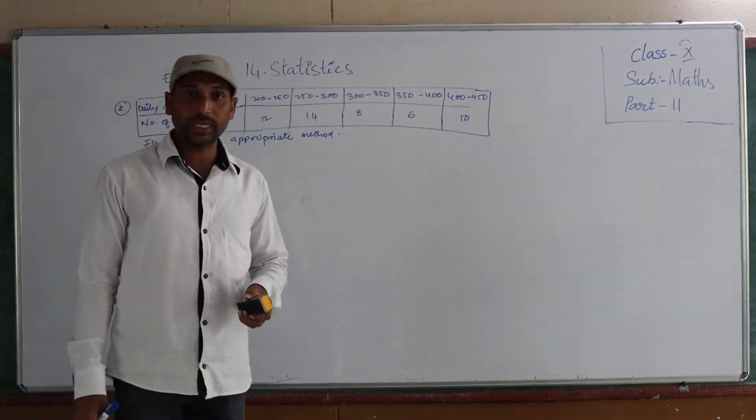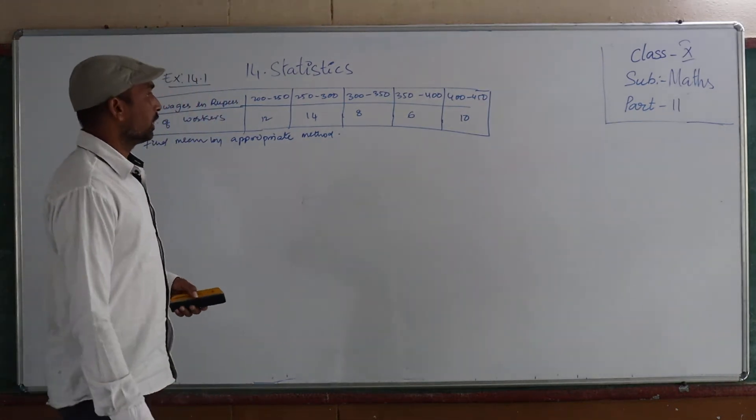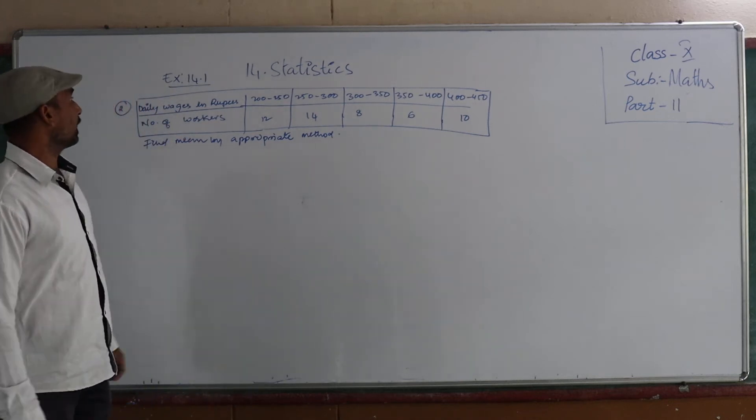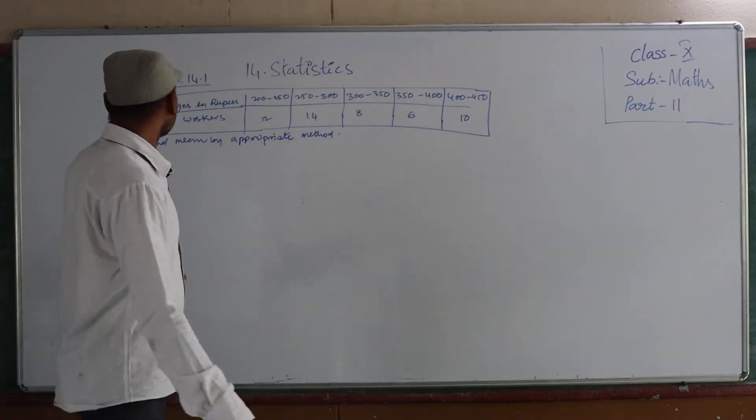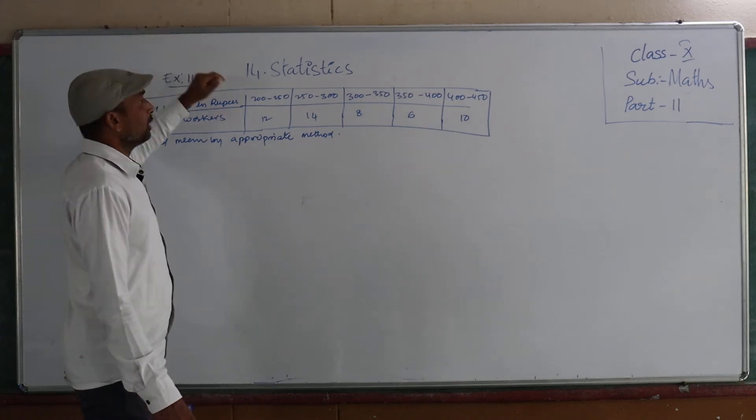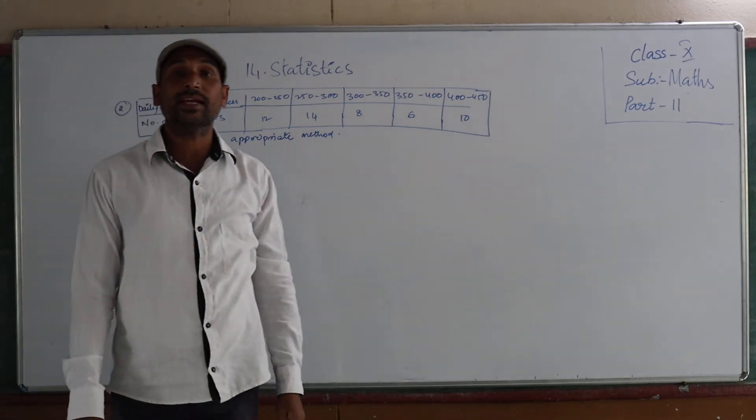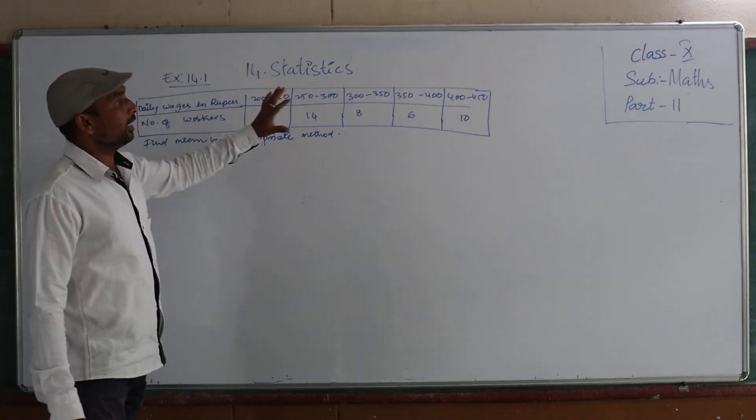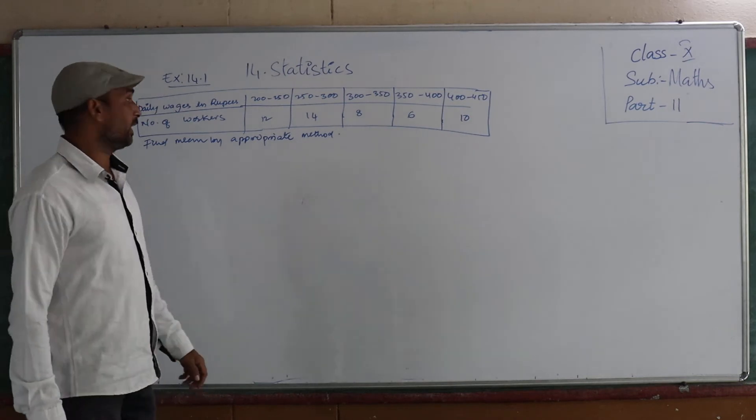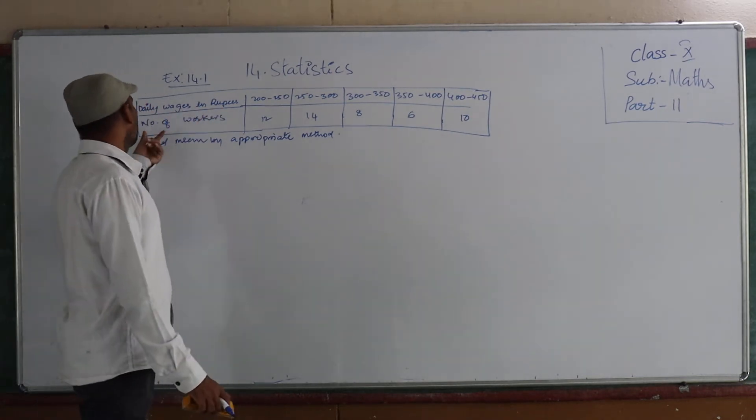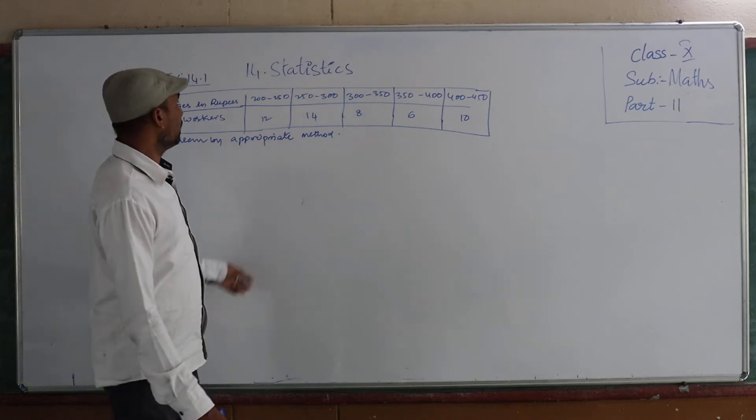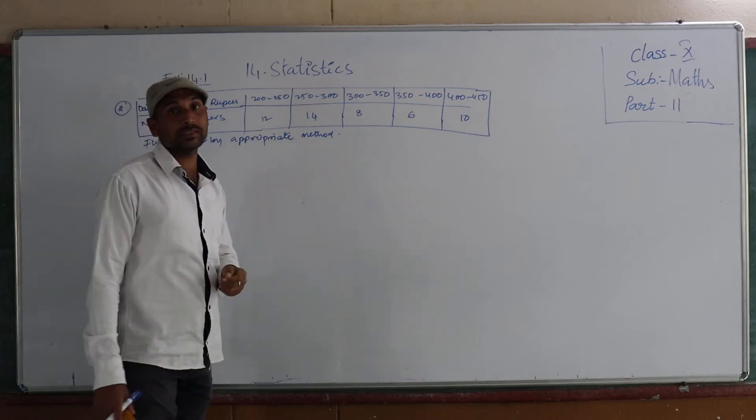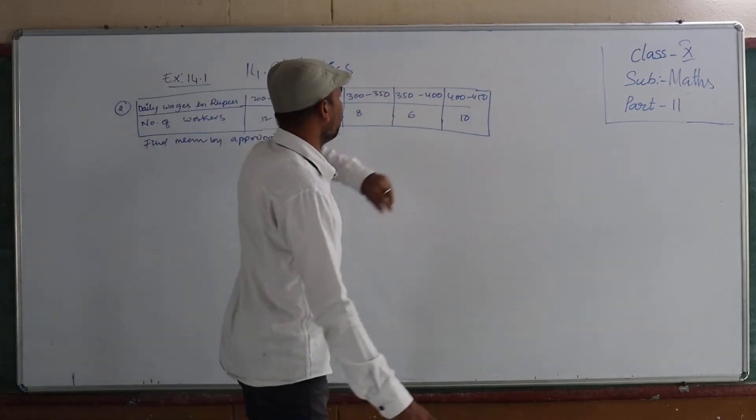Okay children, so here the continuation of the 10th part. So now let us discuss exercise problems. So in the 14.1, the first exercise, the second problem I am going to explain. See, they are given here one data, means group data. Dining exercise group is number of workers. Means 200 to 250 rupees the members they are getting.